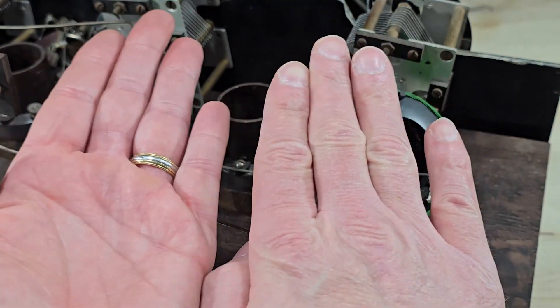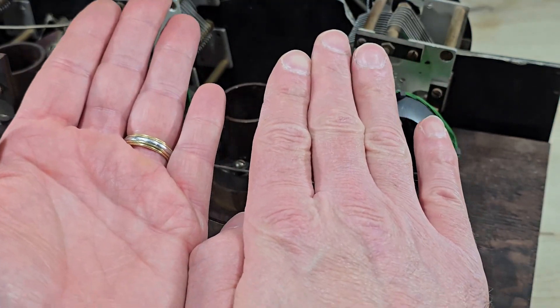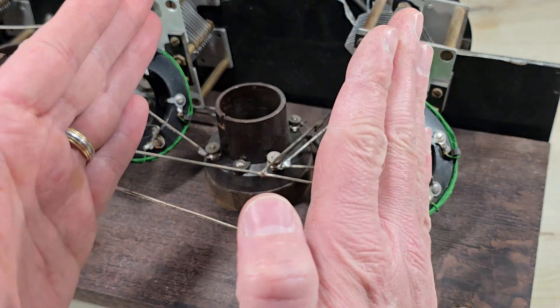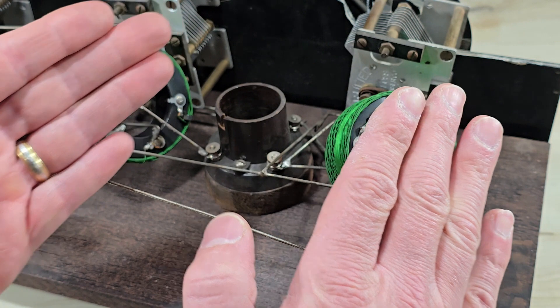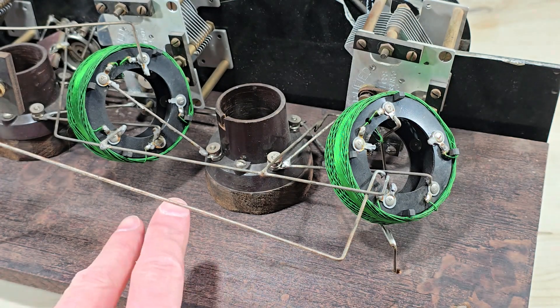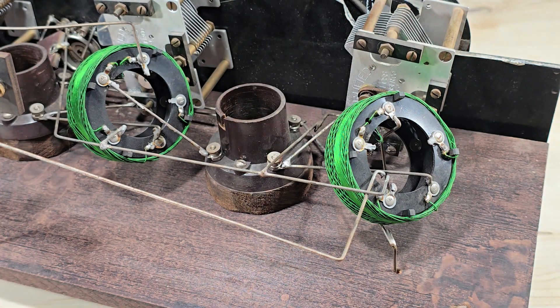Instead, what they chose to do is mount the coils at this angle, which provided the least amount of coupling. That, coupled with the distance, prevented this receiver from oscillating.